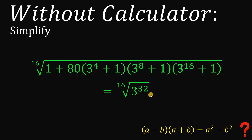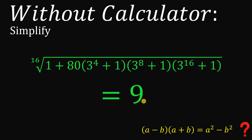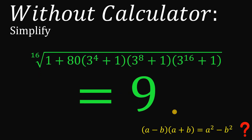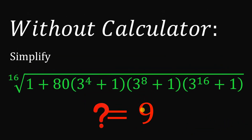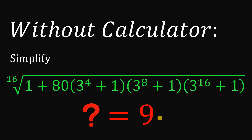The 16th root of 3 raised to the power of 32 can be written as 3 raised to the power of 32 over 16. Now, 32 over 16 is just equal to 2. And finally, 3 squared equals 3 times 3, which gives us 9. Therefore, without using any calculators, the numerical value of our original expression is equal to 9. And as always, we are done.